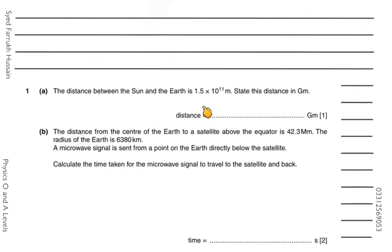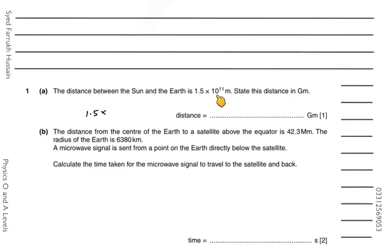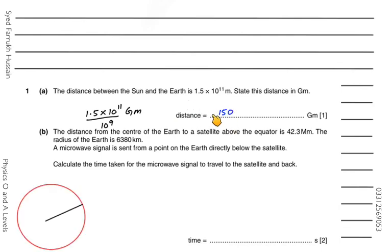In the next question, 1.5 × 10¹¹ meters must be converted to gigameters. To add a prefix, divide the magnitude by the value of the prefix. Giga is 10⁹, so dividing 1.5 × 10¹¹ by 10⁹ gives 150 gigameters.